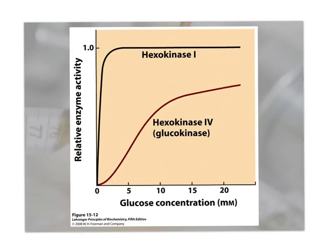The two points to note: hexokinase 1, the one in the muscles, has a higher affinity — a tighter binding — for glucose. That means whenever blood glucose levels start to dip, the muscles, brain, and heart get priority over the liver. It's only when blood glucose concentration is really high that glycolysis kicks in for the liver as well. And hexokinase 4 still has a lower catalytic efficiency than hexokinase 1 throughout.